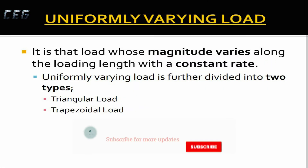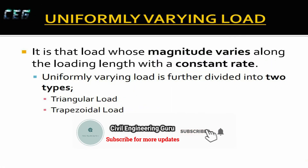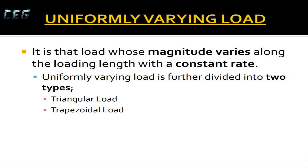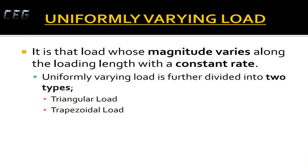Uniformly varying load is that load whose magnitude varies along the loading length with a constant rate. Uniformly varying load is further divided into two types: triangular load and trapezoidal load.